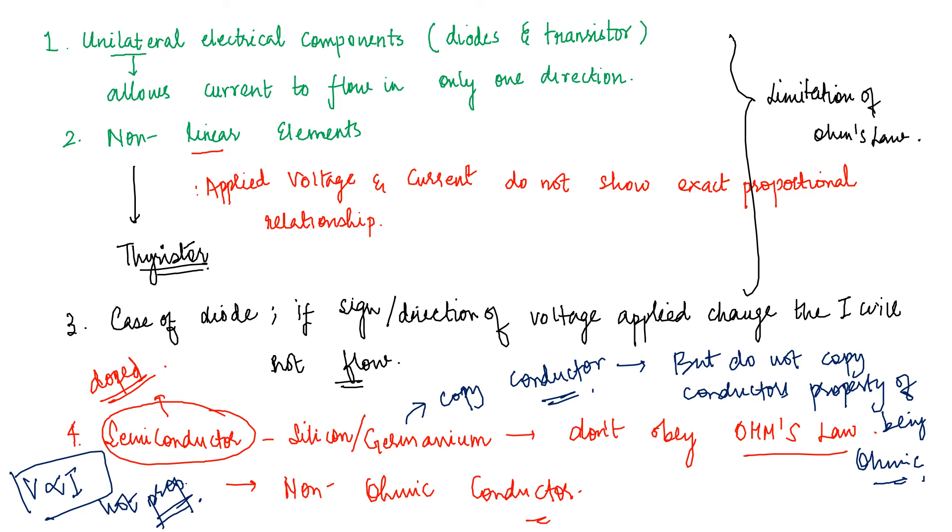But of course we can say they will behave like non-linear elements but they are not considered into the elements, they are semiconductors, they are categorized into semiconductor. So whenever you are writing these points you have to write a separate line for non-linear elements giving example of thyristor and then you have to write about semiconductors and you have to write that they are non-ohmic conductors though they are semiconductor when doped, behave as conductor and are non-ohmic in relationship or in property.